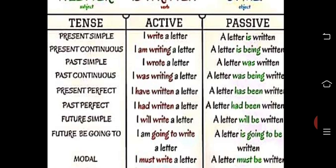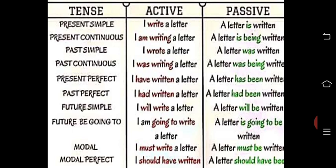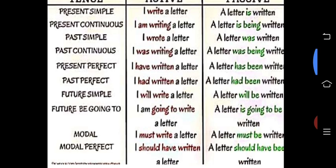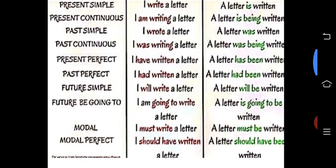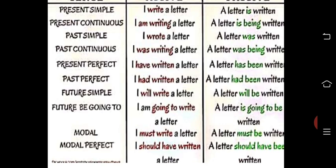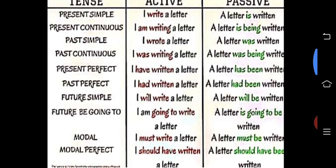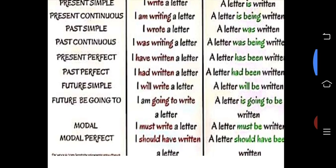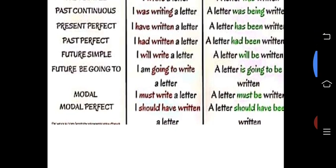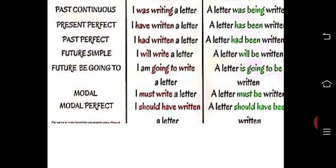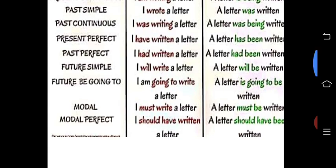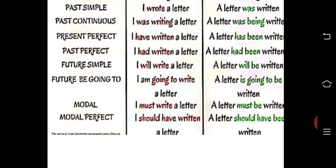'Was writing' is converted into 'was being.' For present perfect: 'I have written a letter' → 'A letter has been written.' For past perfect: 'had written' → 'had been written.' For future simple: 'will write' → 'will be written.' For going-to future: 'I am going to write a letter' → 'A letter is going to be written.' For modal verbs, we use 'be': 'I must write a letter' → 'A letter must be written.' 'I should have written a letter' → 'A letter should have been written.'